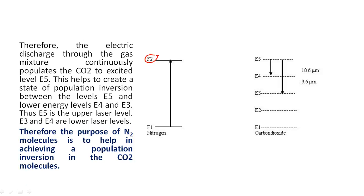This helps to create a state of population inversion between the levels E5 and lower energy levels E4 and E3. Thus E5 is the upper laser level; E3 and E4 are lower laser levels. Therefore, the purpose of nitrogen molecules is to help in achieving population inversion in the carbon dioxide molecules.